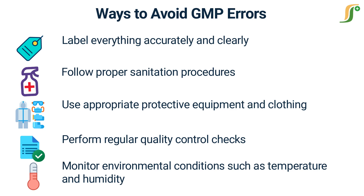Following GMP regulations is essential for ensuring product quality, safety, and compliance. By implementing the 10 common ways to avoid the most frequent GMP errors, manufacturers can reduce the risk of errors and contamination, increase efficiency and productivity, and maintain a positive reputation with customers and regulatory agencies. Proper training, documentation, sanitation procedures, and quality control checks are all critical components of a successful GMP program, as is the use of appropriate materials, equipment, and protective gear. By prioritizing GMP compliance and making it a core part of their operations, manufacturers can ensure that their products meet the highest standards of quality and safety. You must implement these regulations in your manufacturing facility.